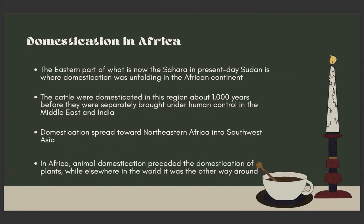There was also domestication in Africa. The eastern part of what is now the Sahara and present-day Sudan is where domestication was unfolding in the African continent. The cattle were domesticated in this region about 1,000 years before they were separately brought under human control in the Middle East and India. Domestication spread toward northeastern Africa into Southwest Asia. In Africa, animal domestication preceded the domestication of plants, while elsewhere in the world it was the other way around.